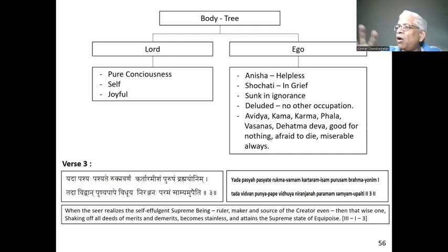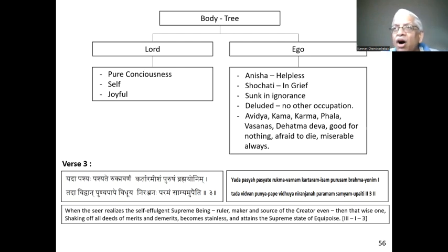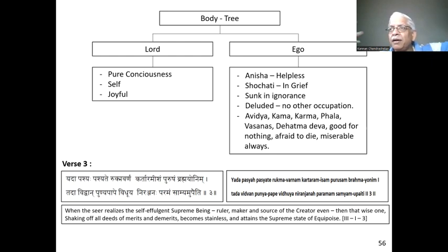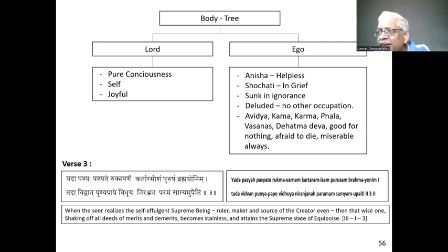All these — Avidya, Kama, Karma — are there, but they are not real; they can be experienced, but they have a purpose: to make us look inward and realize the truth. Because of these things I am afraid to die, I am always miserable. The small I — the ego — looks at the big I, the capital I, which is the Self. Without the capital I, the small I doesn't exist, because existence is borrowed from the capital I. Coming to Vedanta, I can drop this identification and look inward and realize the truth as the Sakshi.